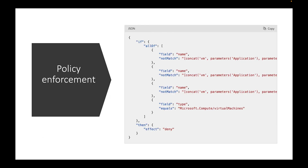How do you enforce naming conventions? You use Azure policies. On screen is a custom Azure policy — I'll link the documentation in the description. The policy checks if the resource name does not match the required pattern, using a concatenation starting with 'vm' and your defined parameters. The effect at the bottom is 'deny', so if the name doesn't match, the deployment is blocked, ensuring your architects deploy resources that conform to your naming convention.